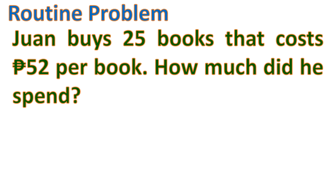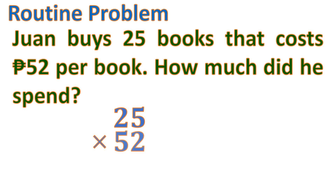So how will you know the total amount spent by Juan? What operation are we going to use? We are going to use multiplication. We will multiply 25 books by each cost. So 25 multiplied by 52, which represents 52 pesos. Let us use mental solving because this is a 2-by-2 digit multiplication.